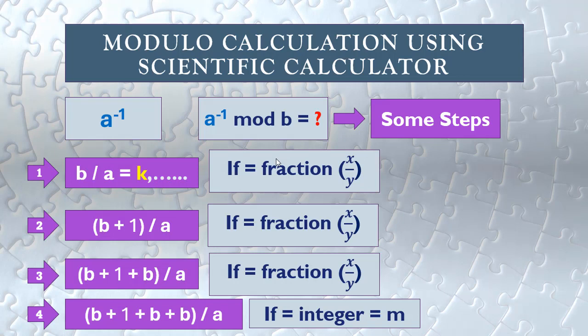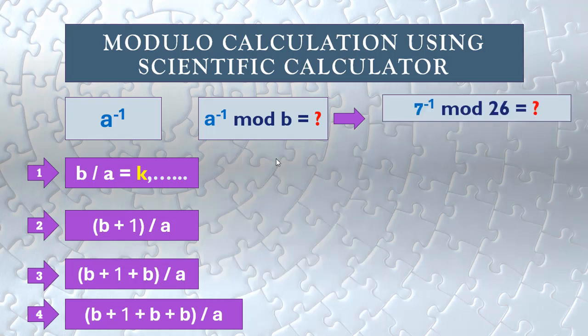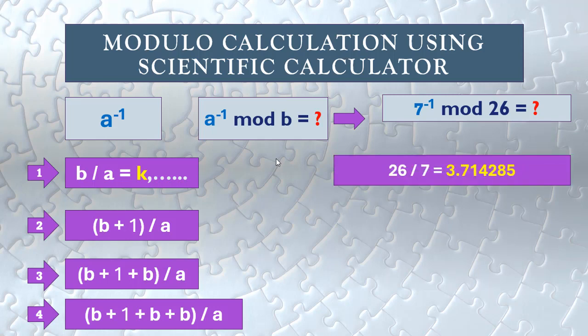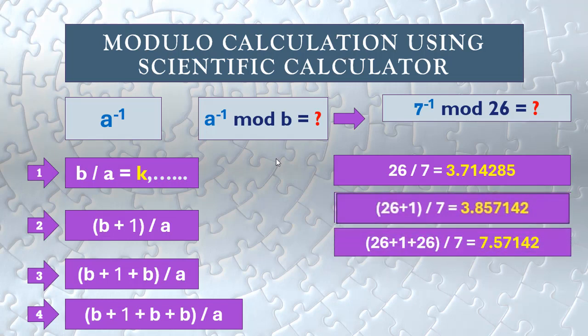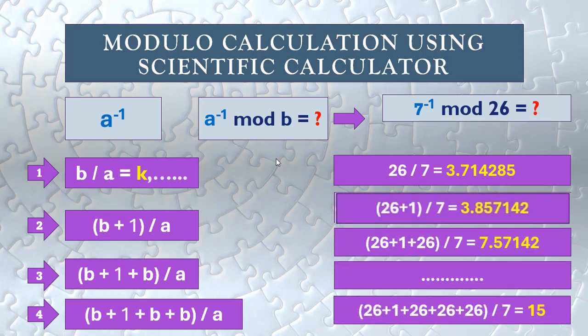When the result gives us an integer, that is our answer. For example, if we want to calculate the multiplicative inverse of 7 to the power of negative 1 mod 26, we first divide 26 by 7, then keep adding 26 as long as we get a fraction, until we get an integer.